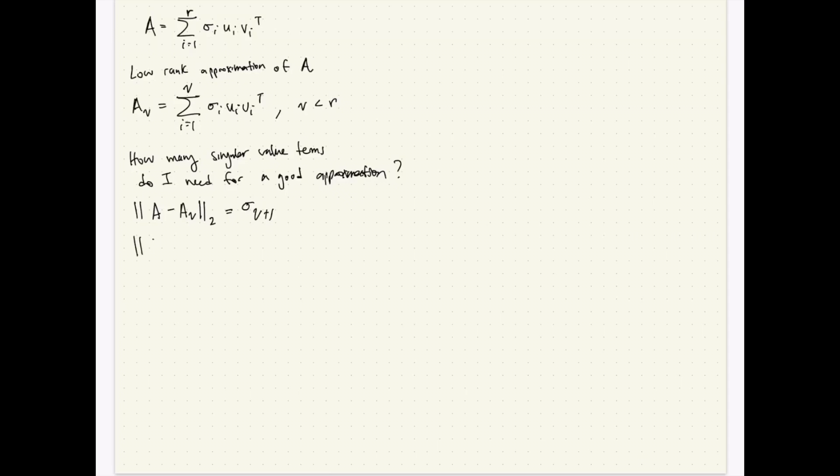I'd rather look at the Frobenius norm and say A minus A sub nu in the Frobenius norm. That's going to equal the square root of sigma nu plus 1 squared plus dot dot dot plus sigma R squared. Remember, we're only going up to R because we only care about the non-zero terms.